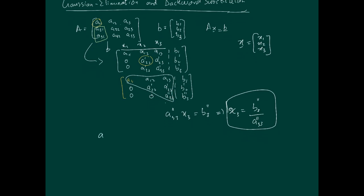This tells me that a22 dash x2 equals b2 dash minus a23 dash times the value of x3, which is as calculated earlier, b3 over a33 double dash.